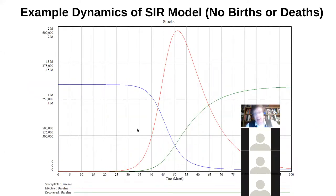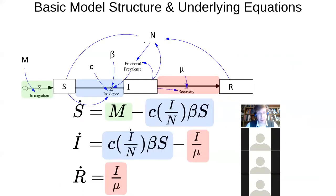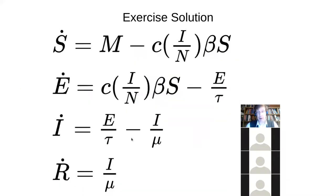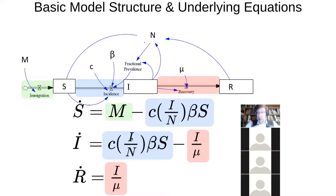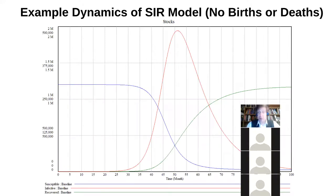The dynamics associated with a system like this — structure determines behavior. There's structure here in these equations illustrated with this model. When we see structure like that, we expect structure in terms of behavior: certain patterns that are regular and orderly. And indeed, that's what we see. We see something like this: a number of susceptibles that starts high and goes low. Notice it doesn't go to zero.